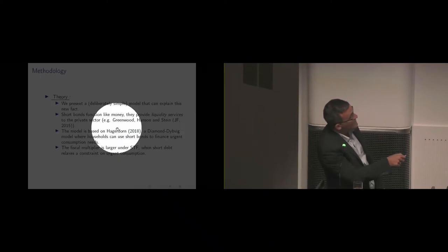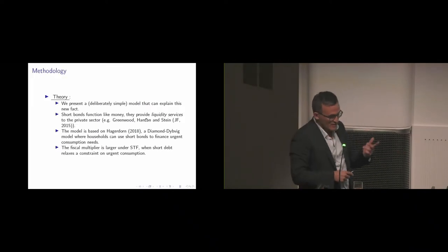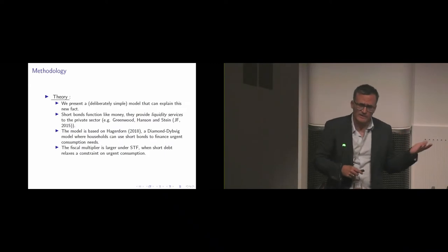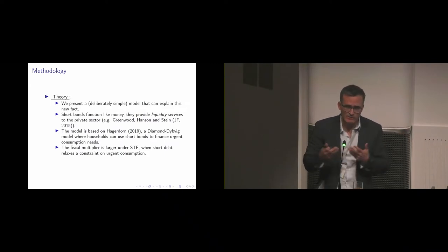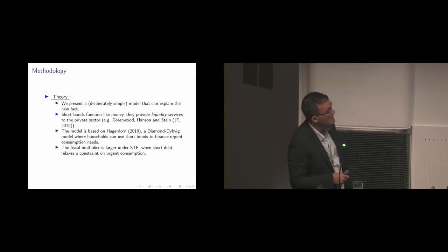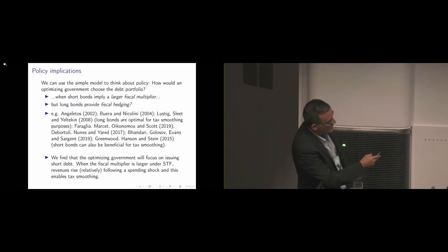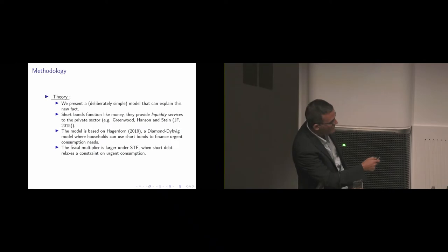We borrow from this theory, in particular focusing on this paper by Greenwood Hansenshtein. These guys showed that short bonds provide liquidity to the private sector, kind of like money-like assets. We have a more elaborate model, so we build a Diamond-Dybvig model which is based on Hagedorn 2018.